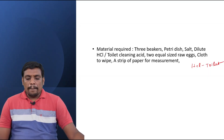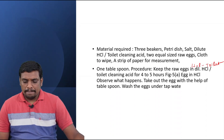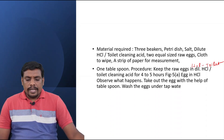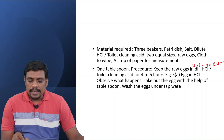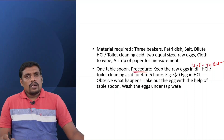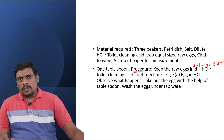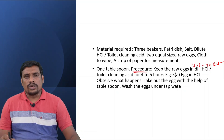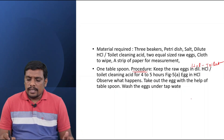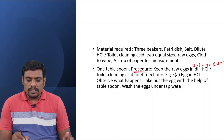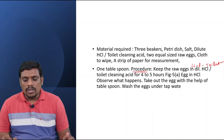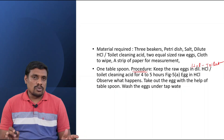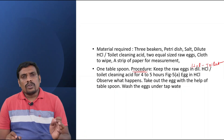We also need a cloth to wipe, and a strip of paper for measurement. Now let us take the procedure. Take the raw eggs and place them in dilute HCl or toilet cleaning acid for four to five hours. Until the shell fully dissolves — at least four hours.